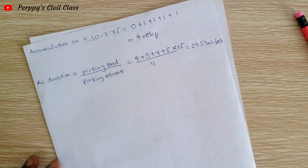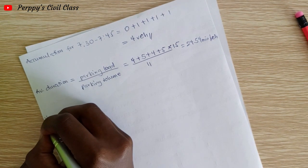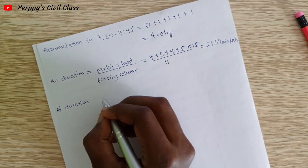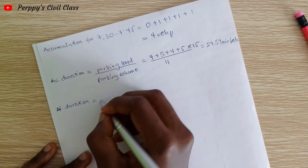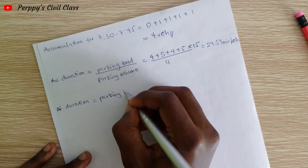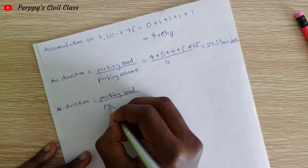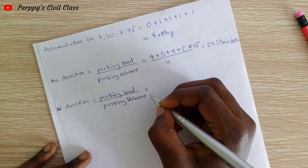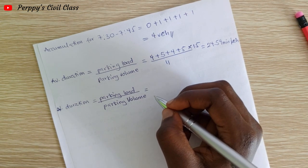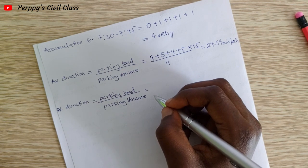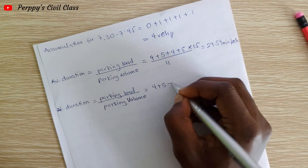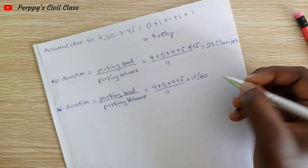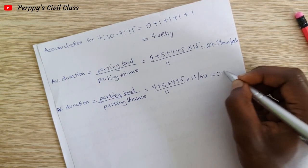Now let's calculate the average duration in hours. We use the same formula — parking load divided by parking volume — but divide by 60 to convert to hours. So (4+5+4+5) divided by (11 × 15), then divided by 60, giving us 0.4 hours per vehicle.